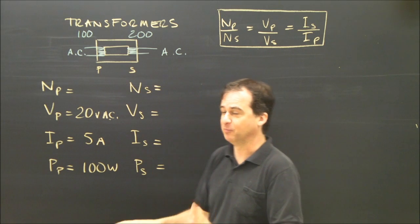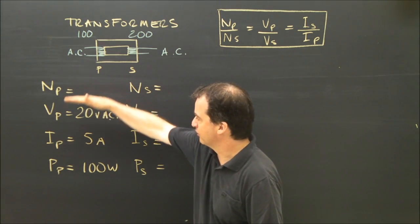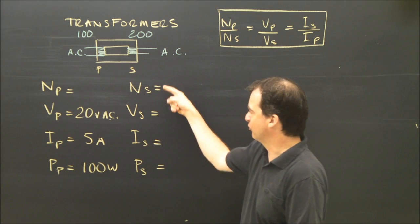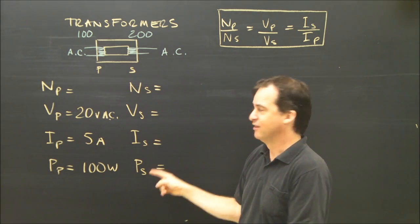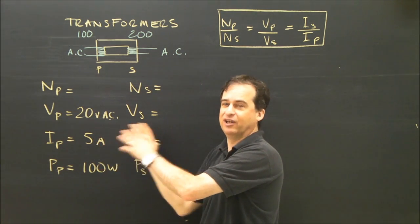When I solve a transformer problem, I suggest you put a list on this side of all your primary information and all your secondary information here. That way you can see what you have very quickly and figure it out very quickly.